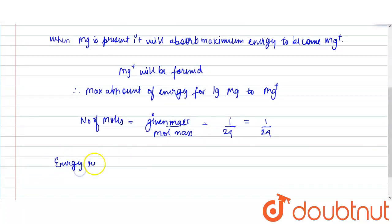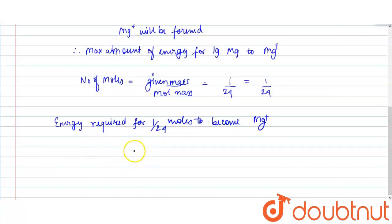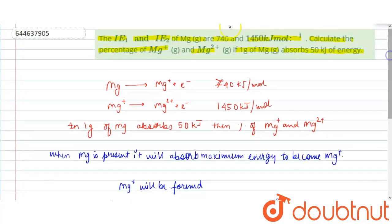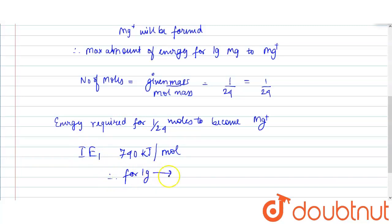The energy required for 1/24 moles of Mg to become Mg⁺ — using the first ionization enthalpy of 740 kJ/mol — is (1/24) × 740, which equals 30.83 kilojoules.